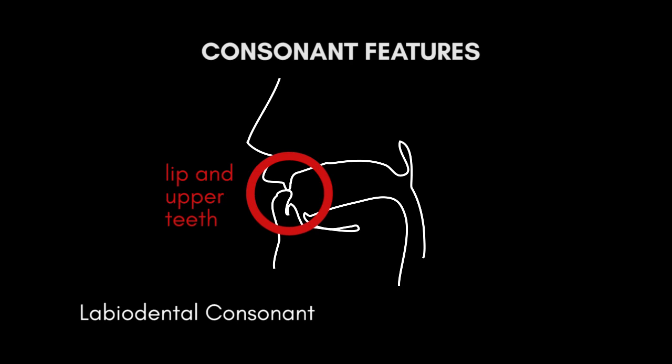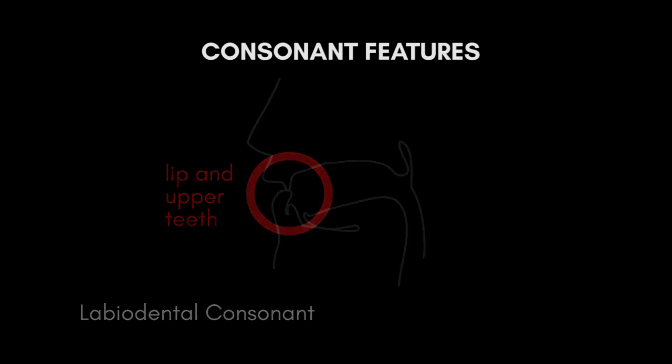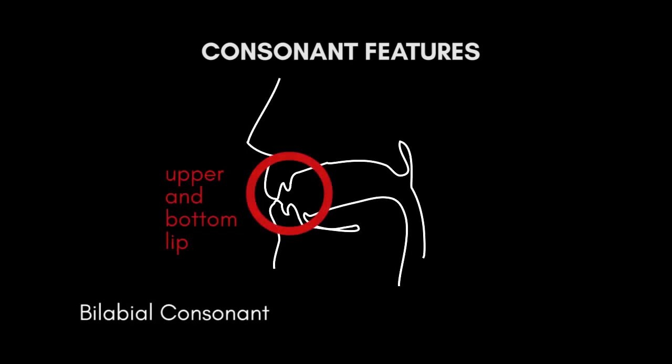The examples of labiodental consonants are f as in the word 'frog' and v as in the word 'vine.' And the last place of articulation is bilabial. Bilabial consonants occur when you block or constrict air flow out of the mouth by putting your lips together. Examples of bilabial consonants are b, p, and m.